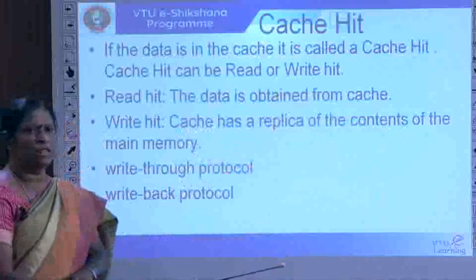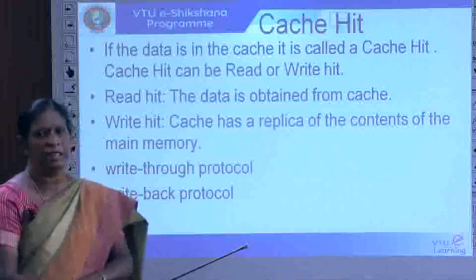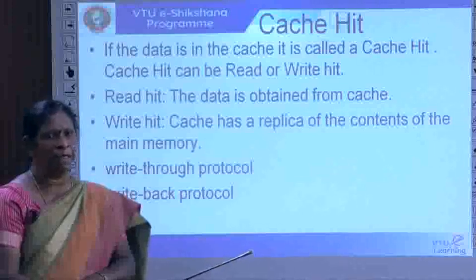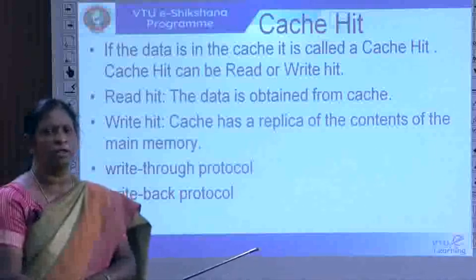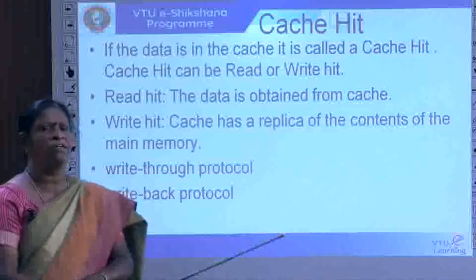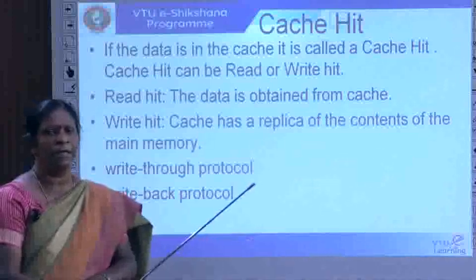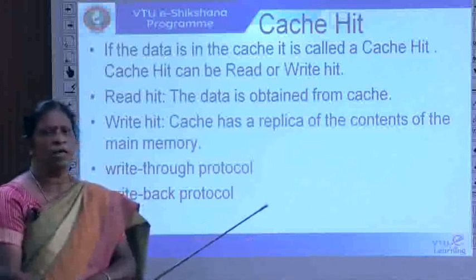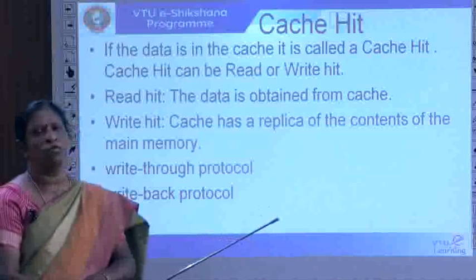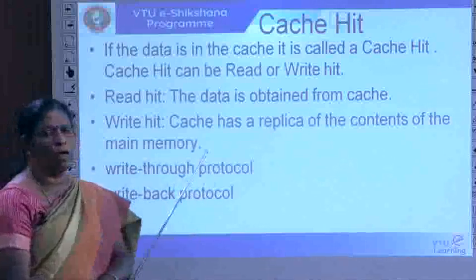A cache hit can be either a read hit or a write hit. In a read hit, data is obtained directly from the cache. For a write hit, the cache holds a replica of the main memory contents. There are two write protocols: write-through and write-back. In write-through, updates are made simultaneously in both the cache and main memory.